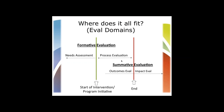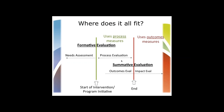All those powers that be in program evaluation also decided to use the words process measures and outcomes measures. Process measures are literally those measures in which we can take a look at what's happening, what processes are being executed, and are we doing what we said we were supposed to be doing. Outcomes measures look at what is it you hope to have happen.